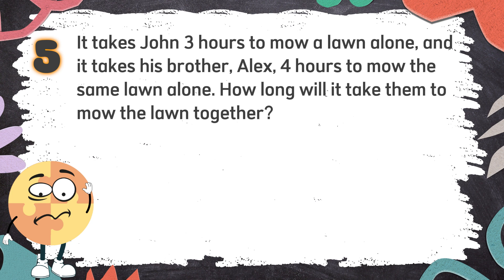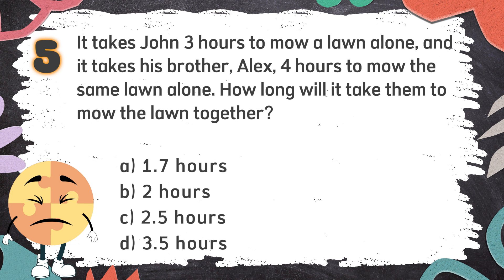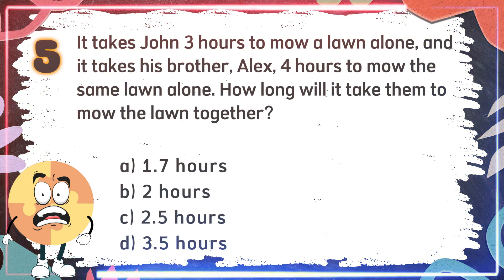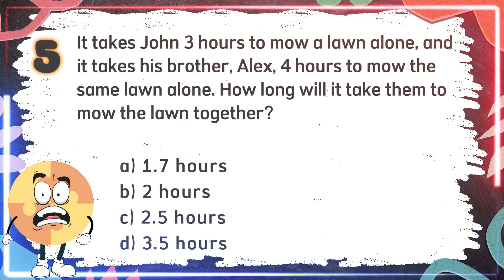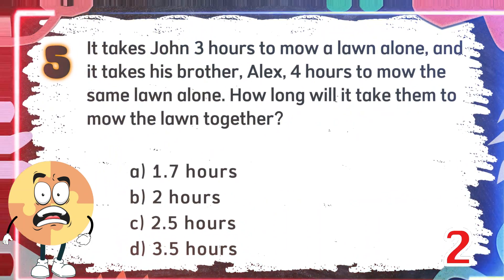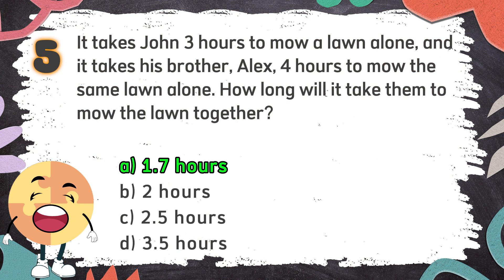Number 5: It takes John 3 hours to mow a lawn alone, and it takes his brother Alex 4 hours to mow the same lawn alone. How long will it take them to mow the lawn together? The choices are: A. 1.7 hours, B. 2 hours, C. 2.5 hours, D. 3.5 hours. The correct answer is A. 1.7 hours.